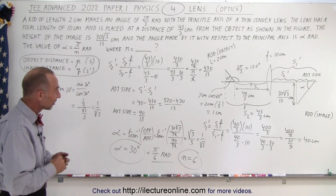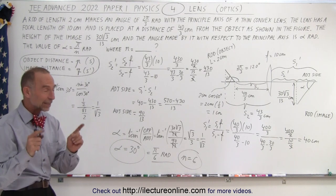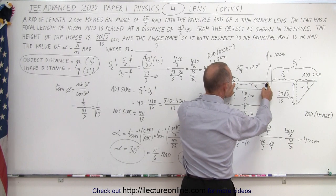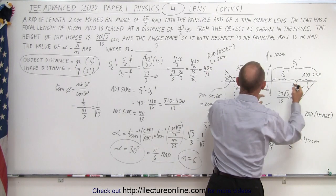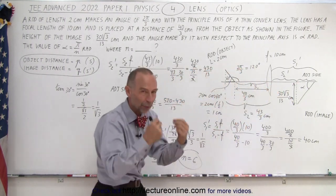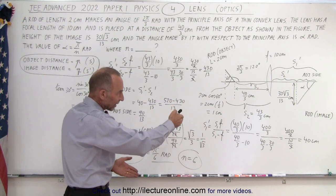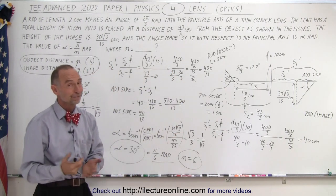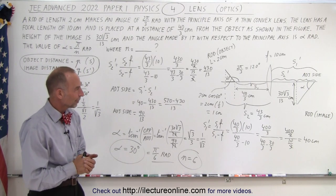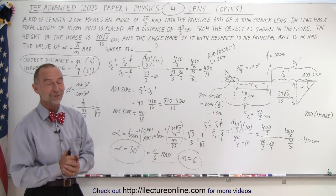This problem is not doable in 3 minutes — you have to be really fast. It all comes down to realizing that each object distance corresponds to its image distance. Subtract the two image distances to get the adjacent side, find the ratio with the opposite side, and take the arctangent to find the angle. One more thing to learn about dealing with lenses when the object isn't straight up and down — and that is how it's done.